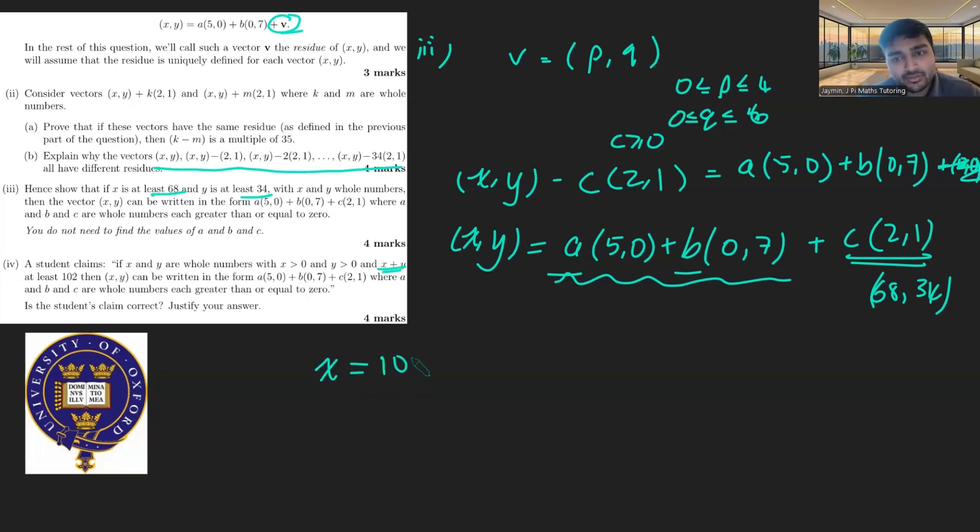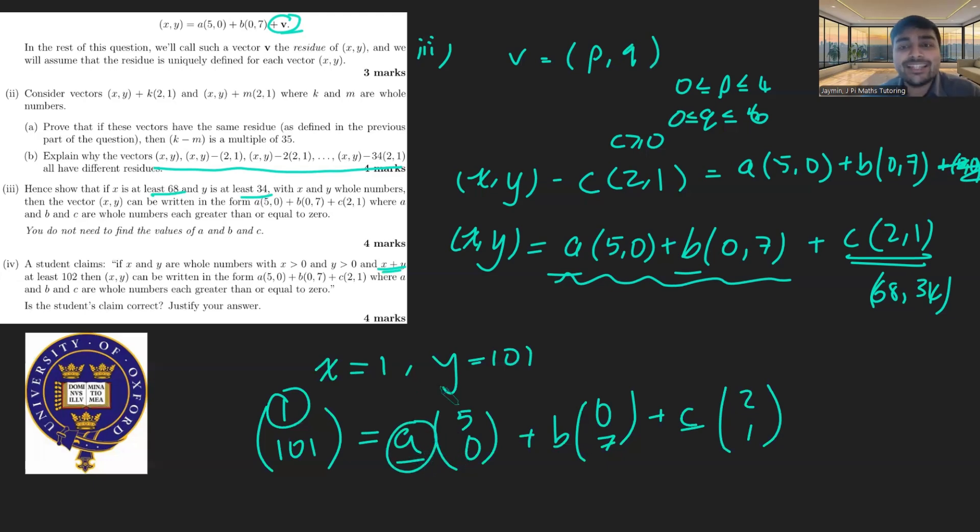Imagine x is, let's say, 101 and y is just 1. Or maybe I'll go the other way around. x is 1 and y is 101. So if we consider this vector here. Now, let's try and write this in the form a times (5,0) plus b times (0,7) plus c times (2,1). The issue is, if we just look at the top component, the top component is 1, which is strictly positive. So that means that one of these a or c has to be positive. But the moment one of them becomes positive, let's say a, you're already contributing 5 times a, which is going to be at least 5, because remember, a, b, and c here are positive integers. Similarly, if c is positive, you're going to be contributing at least 2. So 1 is too small for this. So you're not going to be able to find non-negative integers a, b, and c that satisfy this. And so the student's claim is false.